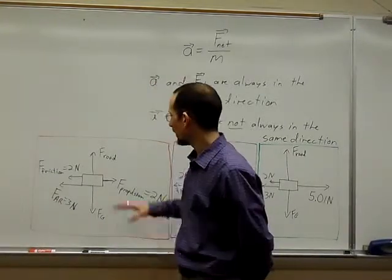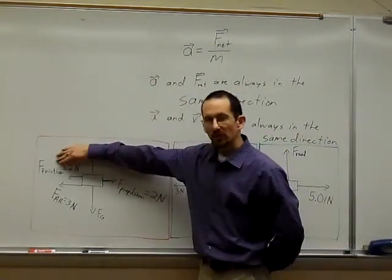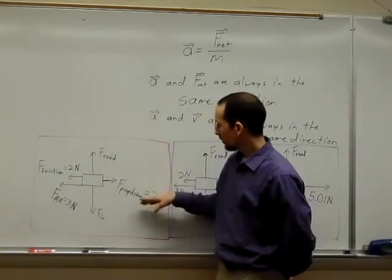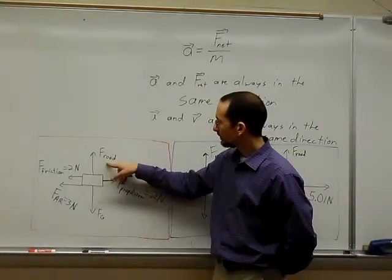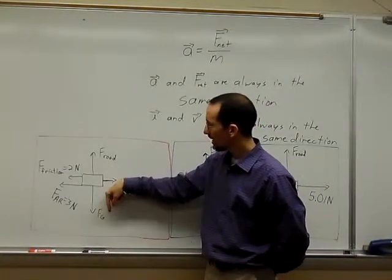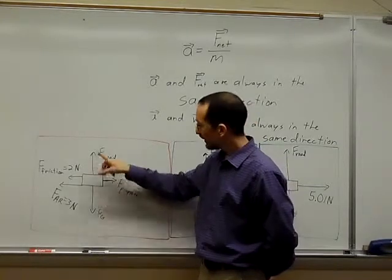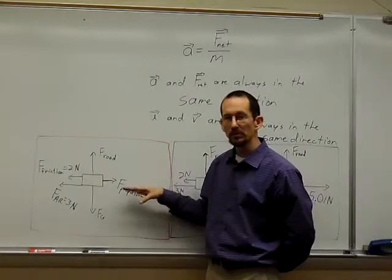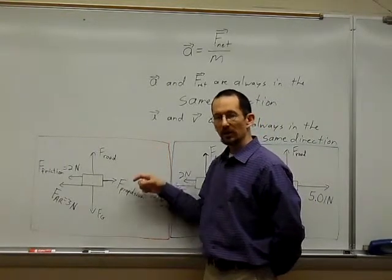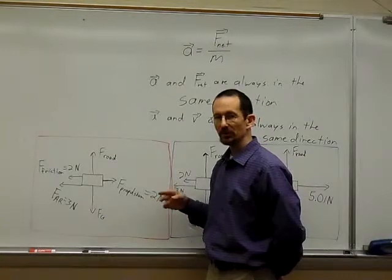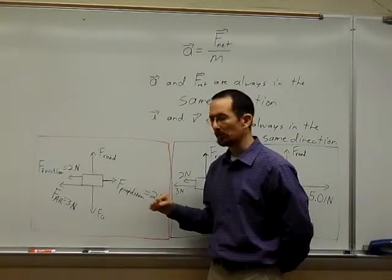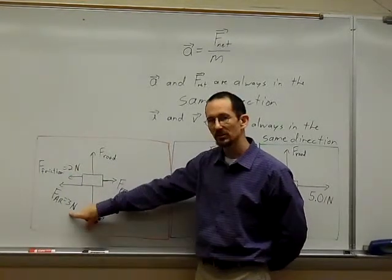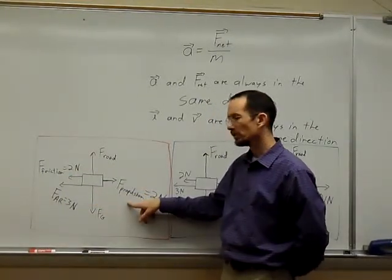So in the first force diagram, right here, I have a force of friction to the left, a force of air resistance to the left, a force of propulsion to the right, and the force of the road and the force of gravity pushing up and down, and those two are both the same size. Now here I've put in some numbers just to make it easier to talk about the sizes. The force of friction is two newtons, the force of air resistance is three newtons, and the force of propulsion is two newtons.